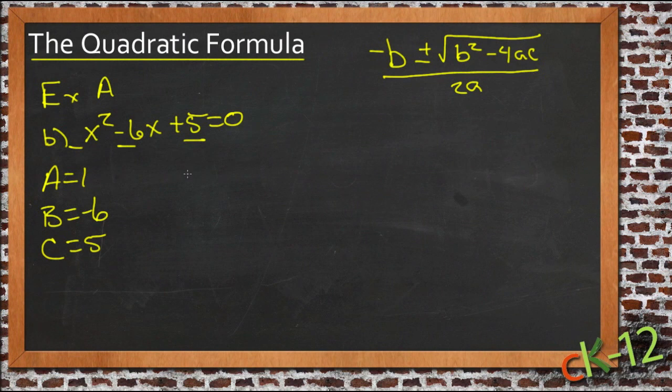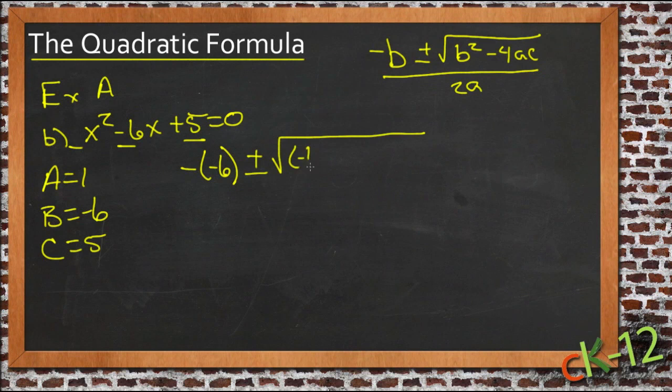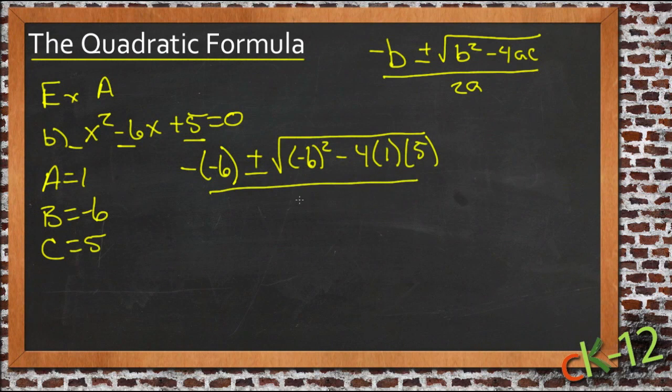We have coefficients of those three terms, put those into our quadratic formula, and we get negative b plus or minus the square root of b squared minus 4 times a times c all over 2 times a.